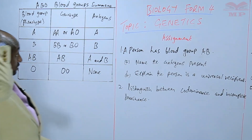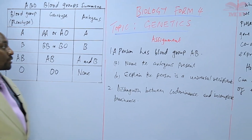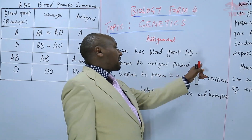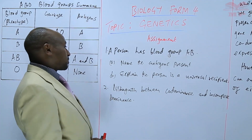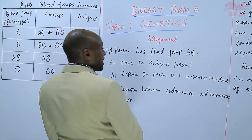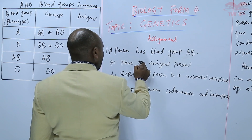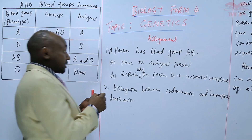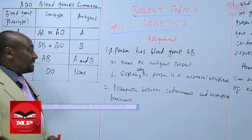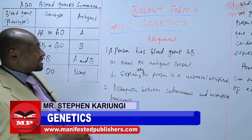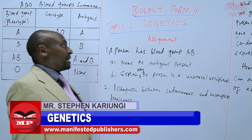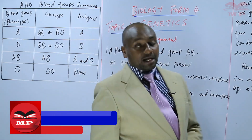We have two questions. First, a person has blood group AB: name the antigens present, and explain why the person is a universal recipient. Second, distinguish between co-dominance, which we have just learned, and incomplete dominance, learned earlier. We are going to stop there until next time. Goodbye.